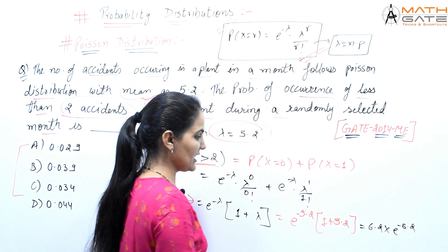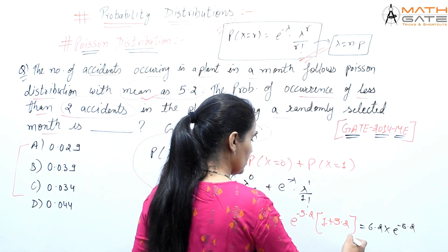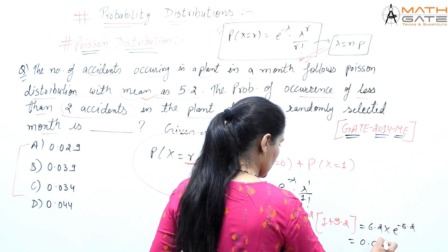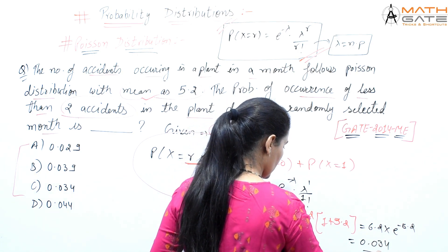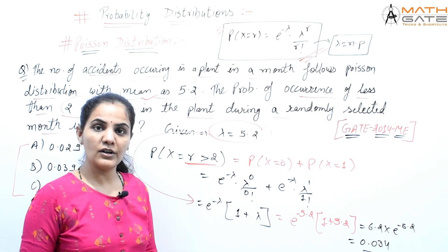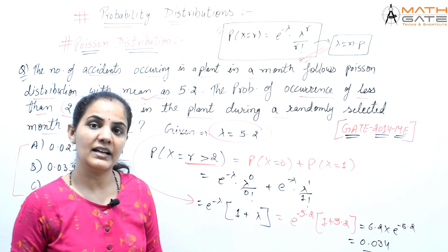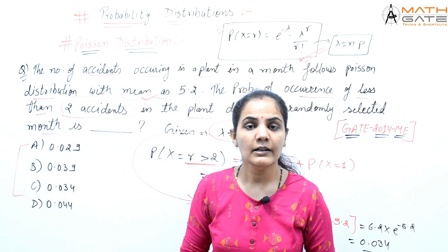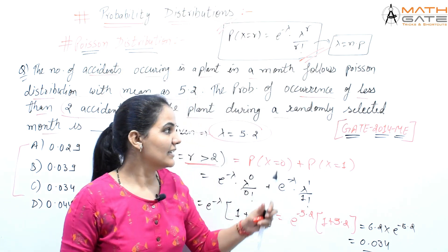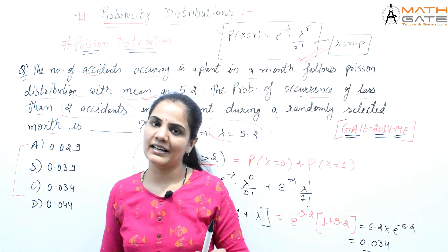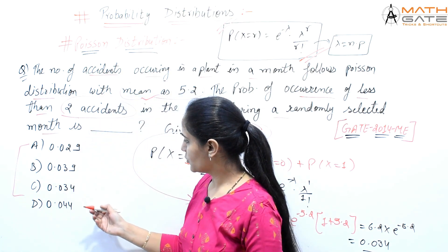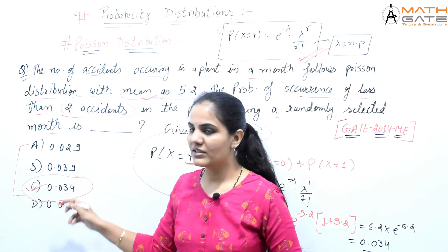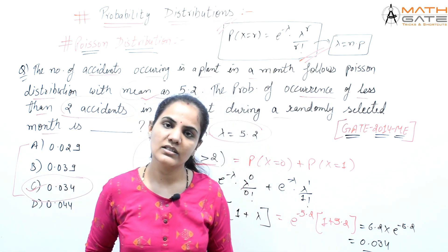When we solve 6.2 into e to the power minus 5.2, we get 0.034. So 0.034 is our answer — the probability of occurrence of less than two accidents. This is option number C, so option C is the right answer of this question.